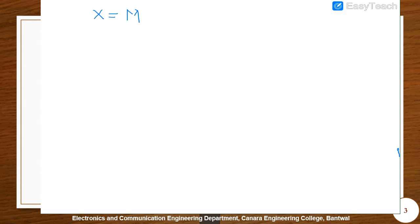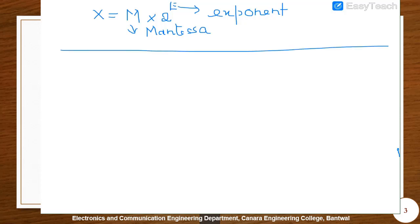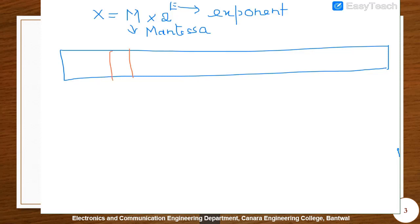Let us start with tutorial number 15, wherein in the first problem we need to give the floating point format as well as represent two numbers in the floating point number representation form. The floating point number representation is always given as x equals m times 2 to the power e. That means we have two parts: the mantissa part and the exponent part. The first four bits represent the exponent part — this is the four-bit exponent part.